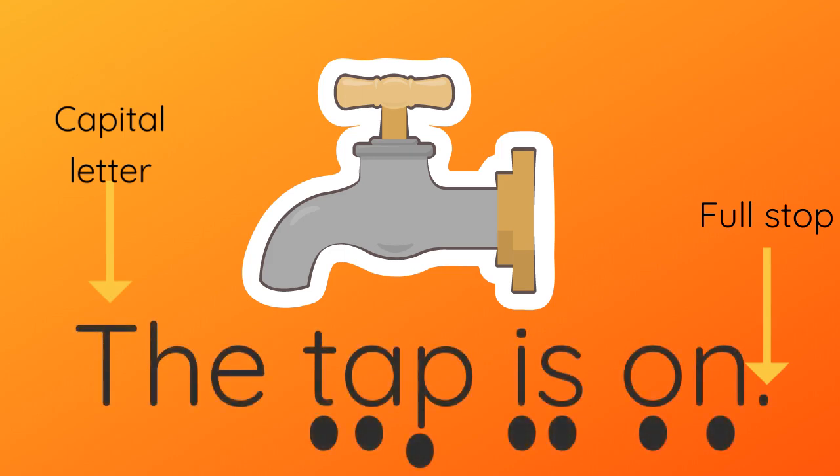Let's have a look at this sentence. The first word is one of our tricky words, so you can't sound that one out. For the other words, pretend to push the buttons as you say each sound. T. The tap is on.